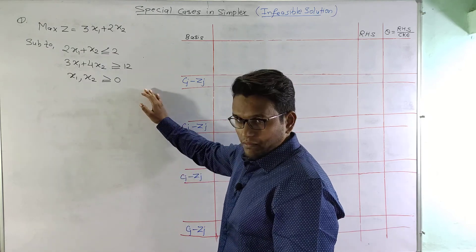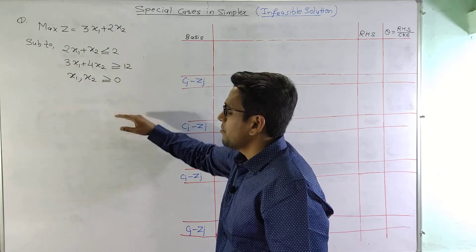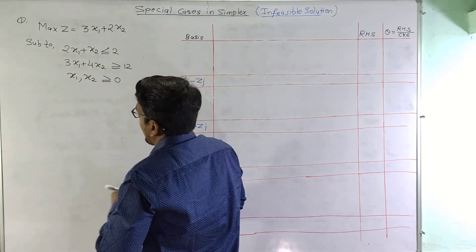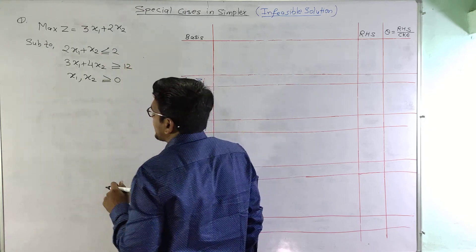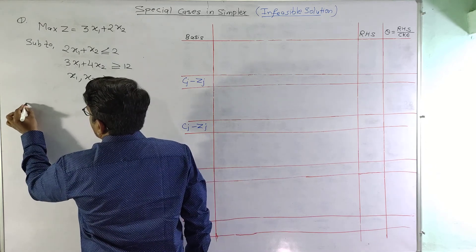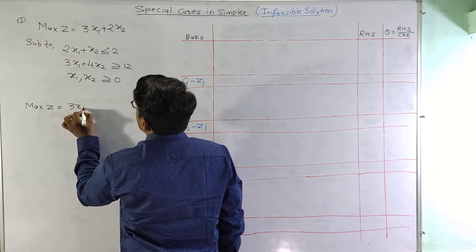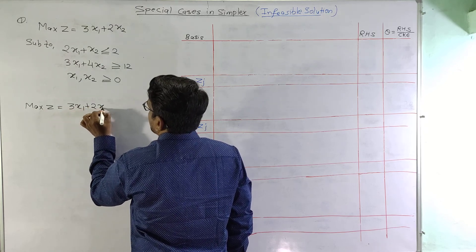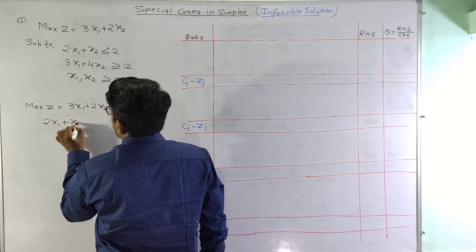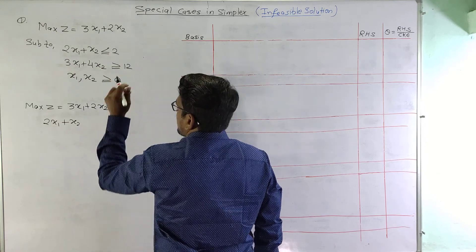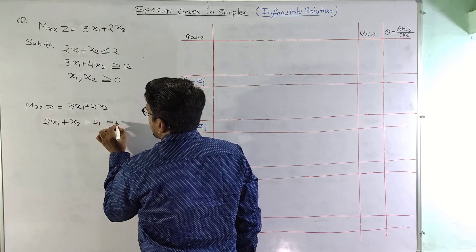As we have done earlier, we will convert this into standard form. Before doing so, we must ensure that the right-hand side values of the constraints are non-negative. This is maximize Z equals 3x1 plus 2x2, subject to 2x1 plus x2. Since this is a less-than-or-equal-to sign, we will add one slack variable S1, giving S1 equals 2.